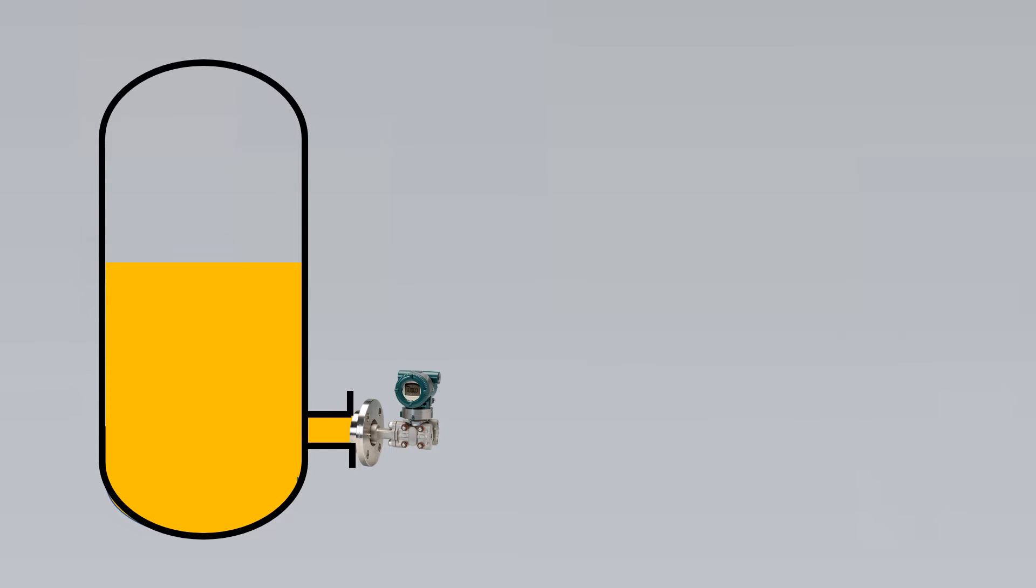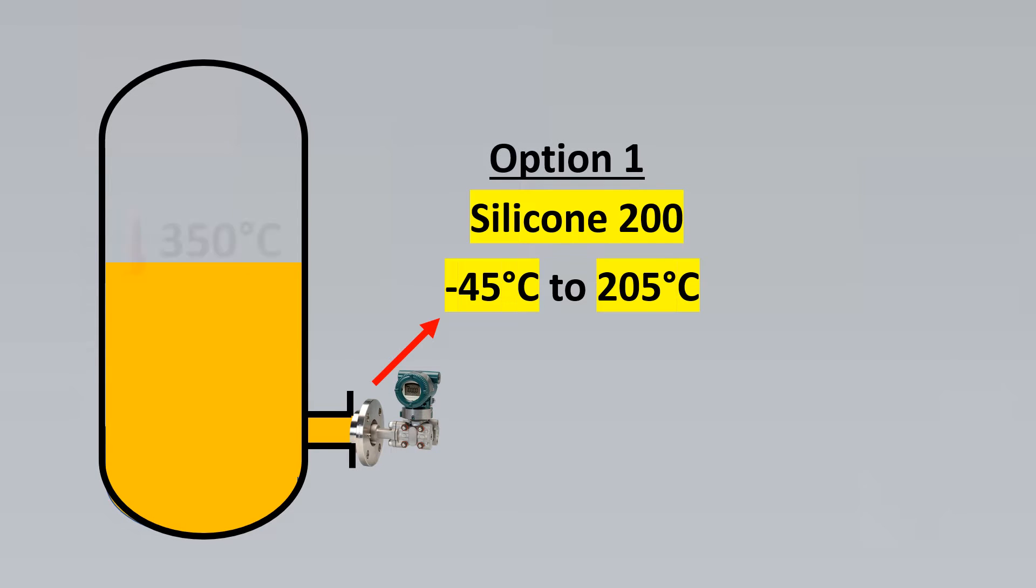But what had happened was the fill fluid that we had initially used was Silicon 200 which has a range of minus 45 degrees Celsius to 205 degrees Celsius. However, we realized that the process temperature was 350 degrees Celsius. And hence this is way beyond the range of Silicon 200 which is one of the most common fill fluids that is used in diaphragm seal systems.